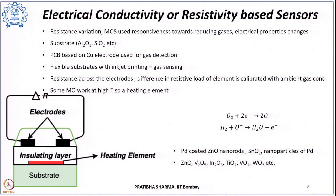Another class is the electrical conductivity or resistivity-based sensor. Changes in resistance or conductivity of the sensing element are mapped to hydrogen gas concentration. These typically use metal oxide semiconducting structures — a substrate of aluminium oxide or silicon dioxide with an insulating layer, a heating element for metal oxides that operate at higher temperatures, digitized electrodes, and a metal oxide layer on top.